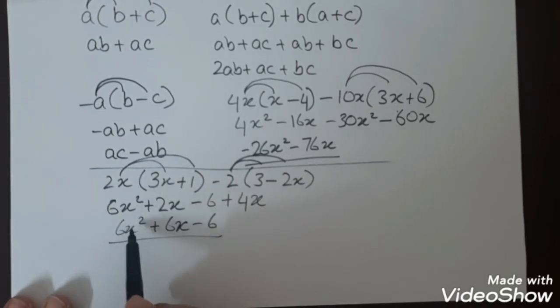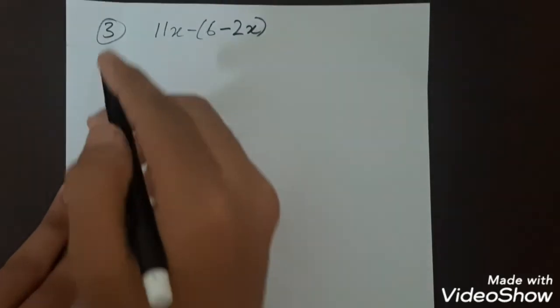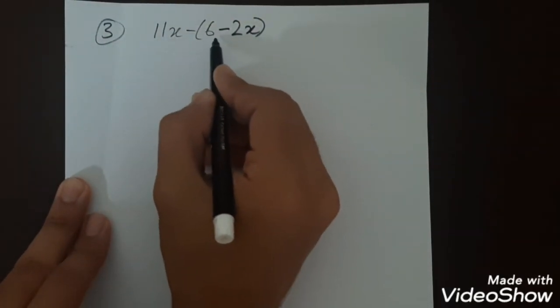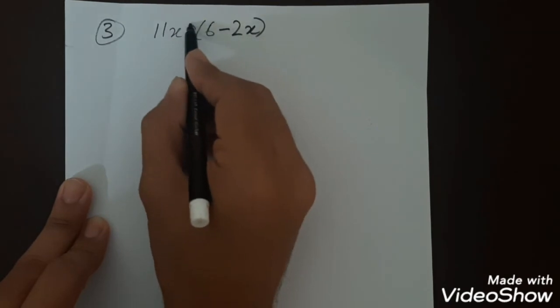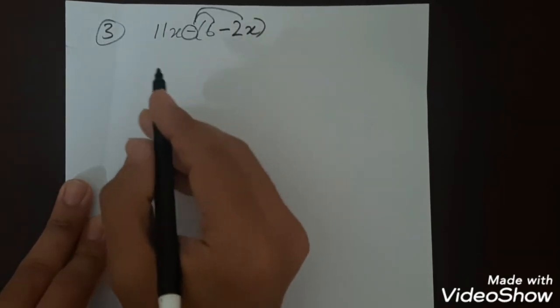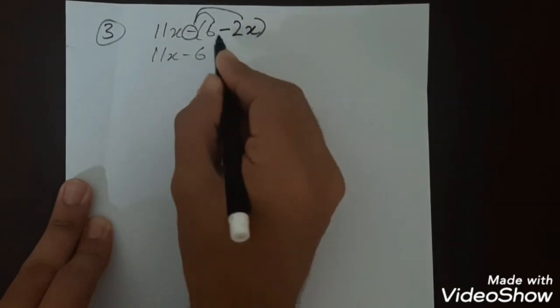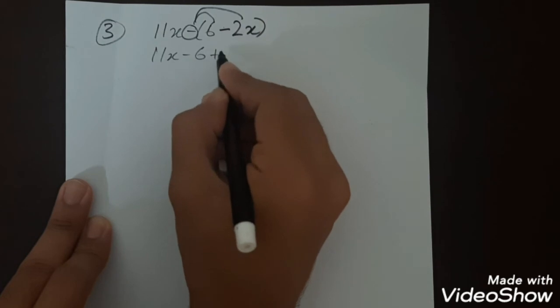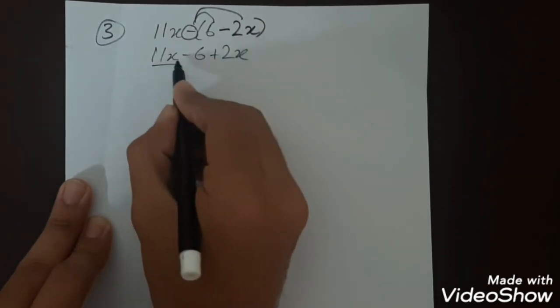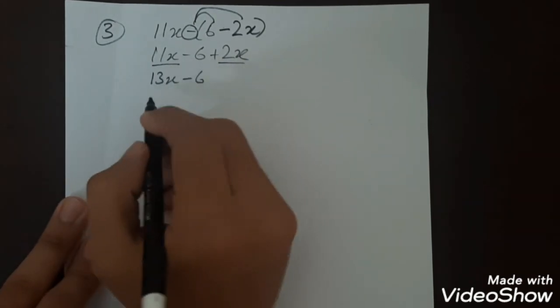In question 3, the equation is 11x minus (6-2x). So you will multiply minus with 6 and minus with -2x. So you write 11x minus 6, and minus times minus will be plus 2x. We will add 11x with 2x, which will be 13x minus 6.